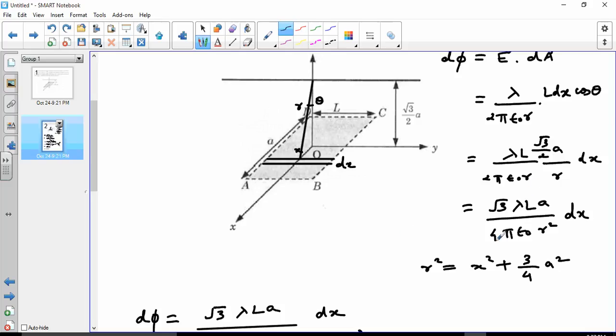So r into r is r square. But r square itself is x square plus root 3 by 2a the whole square. This is r square. So we put this here.